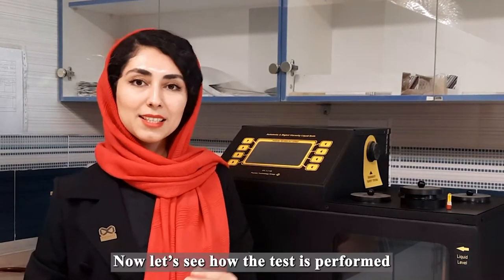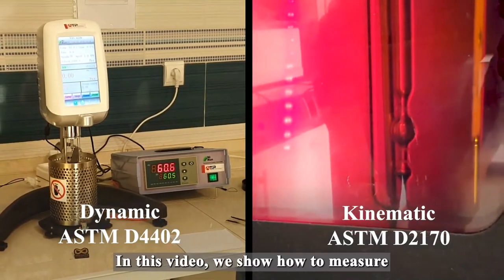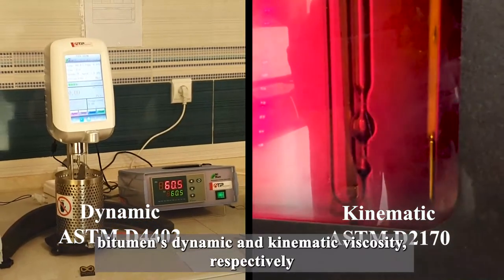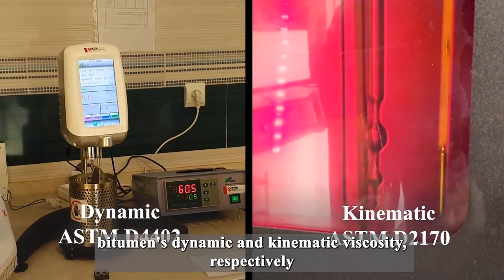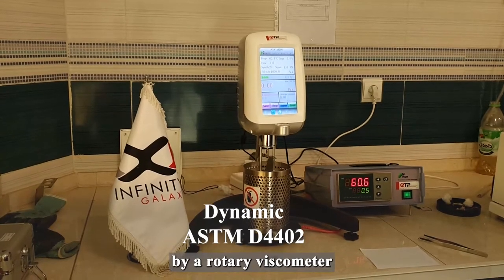Now let's see how the test is performed. In this video, we show how to measure bitumen's dynamic and kinematic viscosity respectively. Number 1: Measurement of dynamic viscosity by a rotary viscometer.